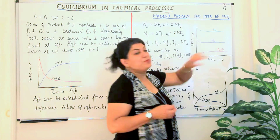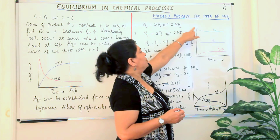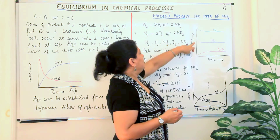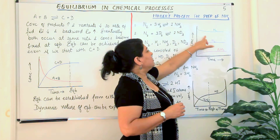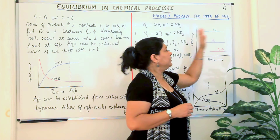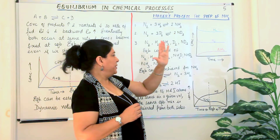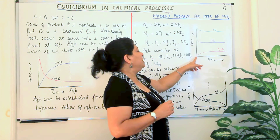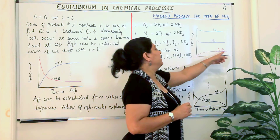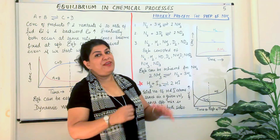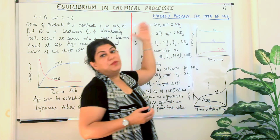Here is the graph for Haber's process. We started with three moles of hydrogen and one mole of nitrogen. The concentrations of hydrogen and nitrogen go down and then level off at a horizontal line when equilibrium is established. The concentration of ammonia starts at zero and increases until it also reaches a horizontal line. If we had started with ammonia instead, we would still have reached the same equilibrium from the other direction.